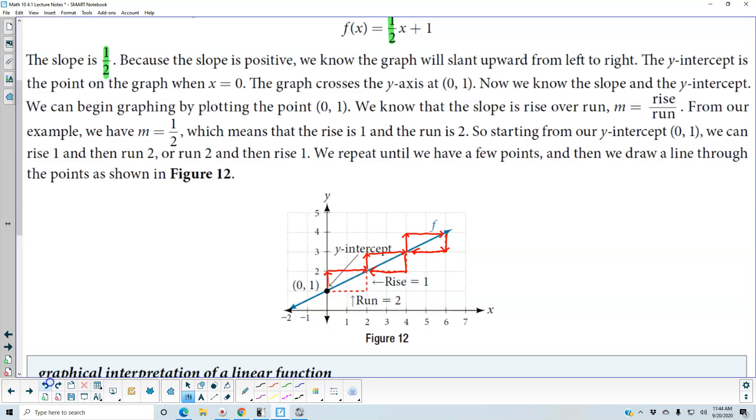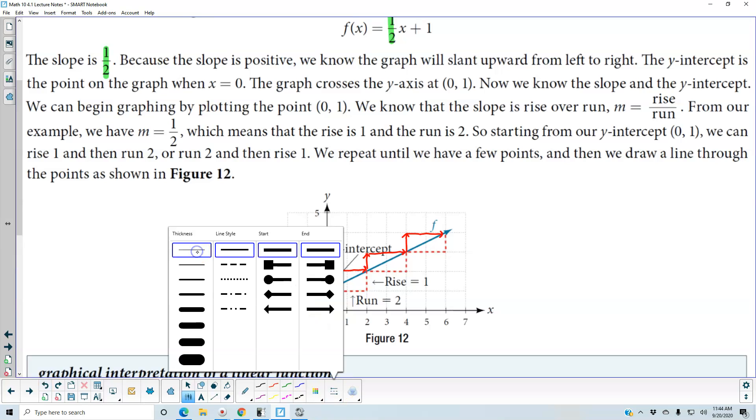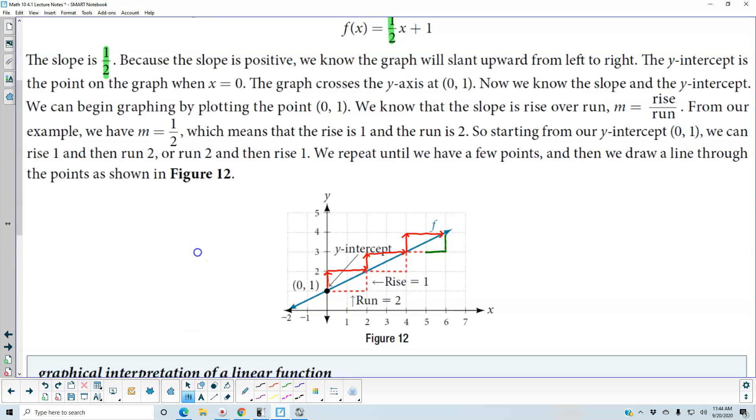What does that mean? Let me go ahead and rewrite this in a different color here to represent what's happening. We're going down one to the left two, down one to the left two, down one and then to the left two. There are ways to represent this slope.